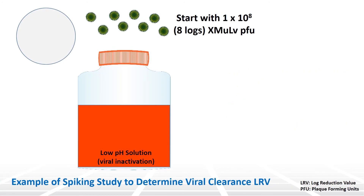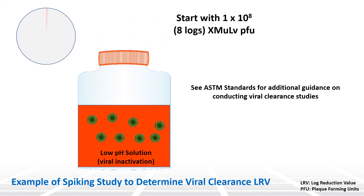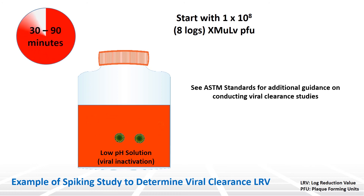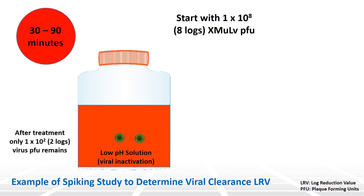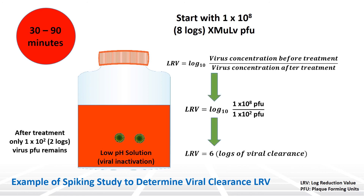To conduct the study, a predetermined amount of known virus is spiked into the starting material of the step being assessed and the process step is performed. Samples are taken periodically and the amount of virus remaining is quantified. Knowing the starting amount of virus and the amount remaining allows for the calculation of a log reduction value for that unit operation.